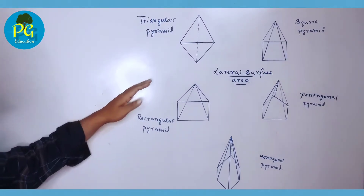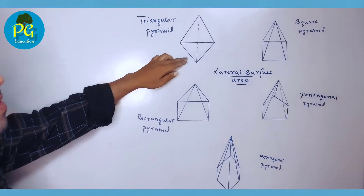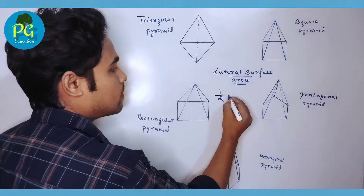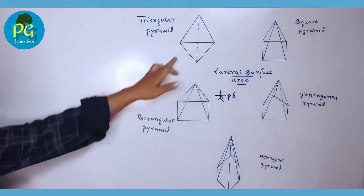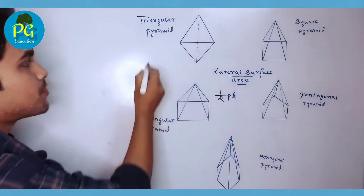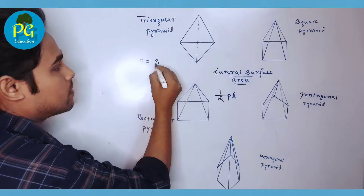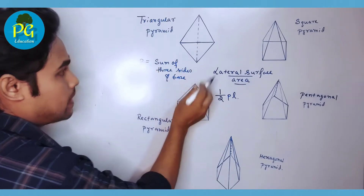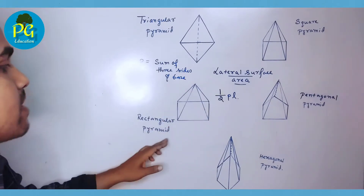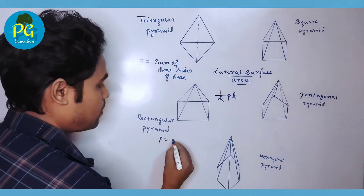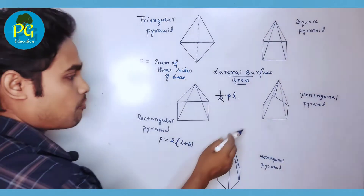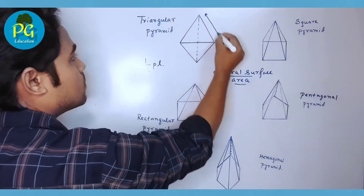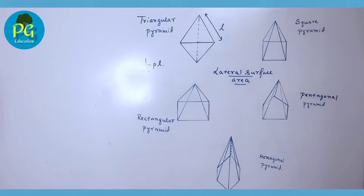The lateral surface area is the area of the outer surface excluding the base. The formula for lateral surface area is half × P × l, where P is the perimeter of the base. In case of a triangle, the perimeter equals the sum of three sides; square: sum of four sides; rectangle: P = 2(l + b); pentagon: sum of five sides; hexagon: sum of six sides. Here l is the slant height.